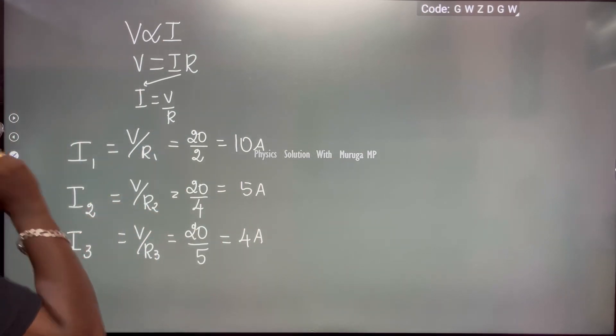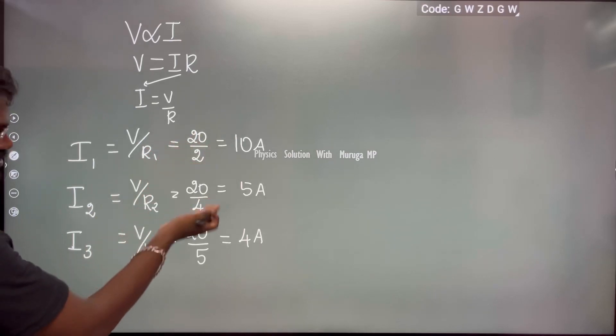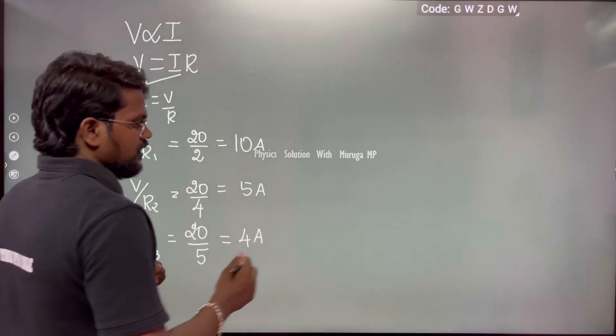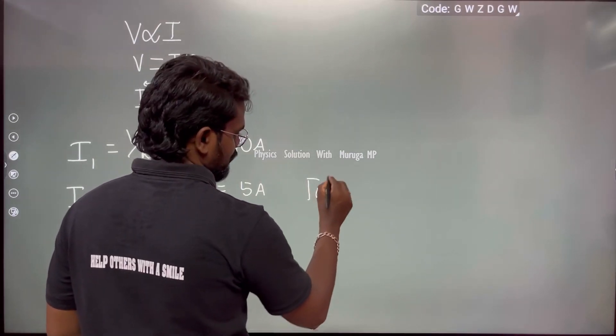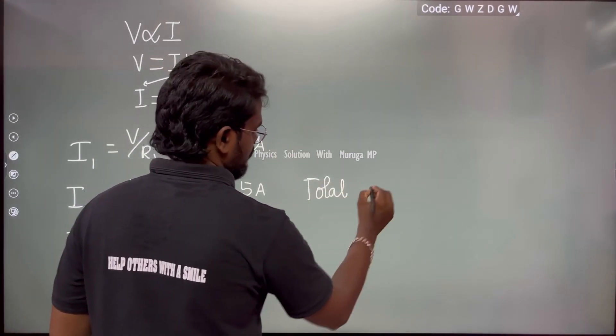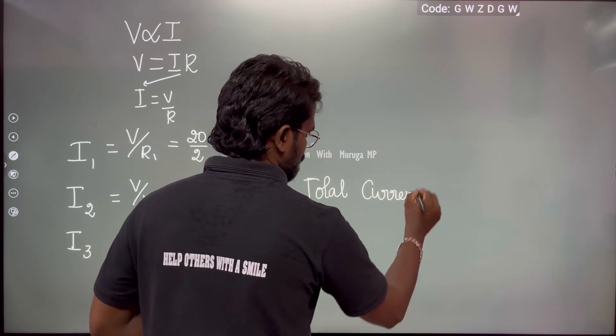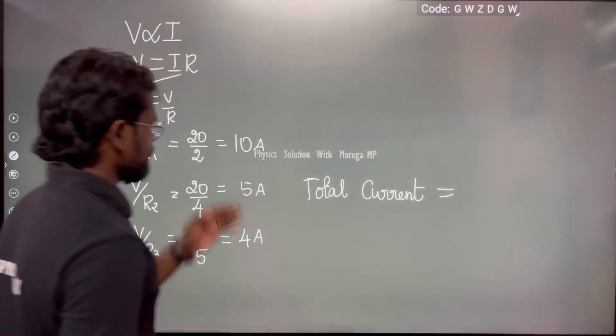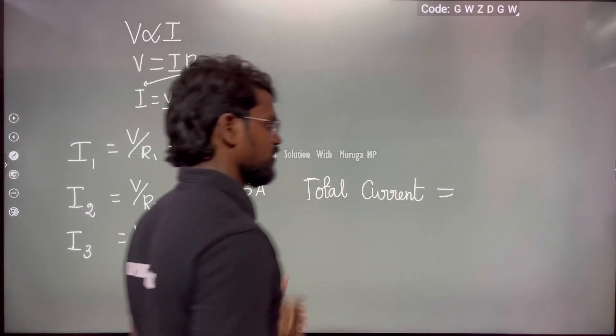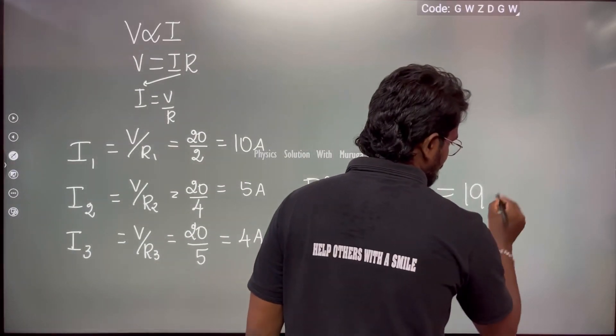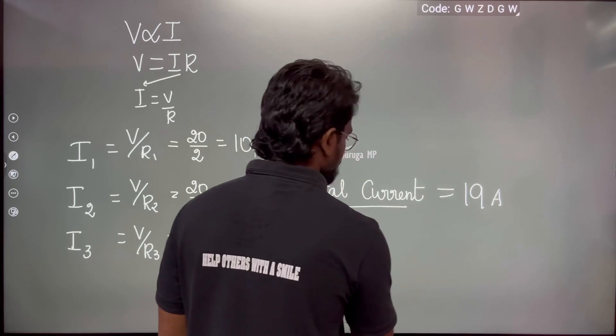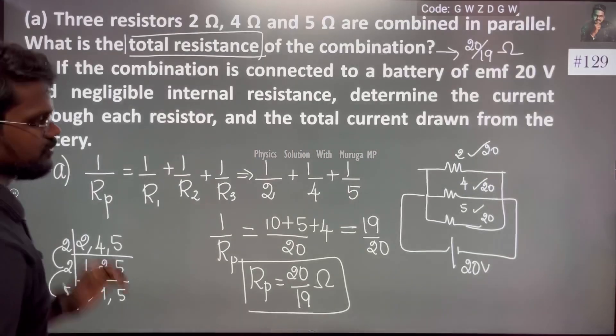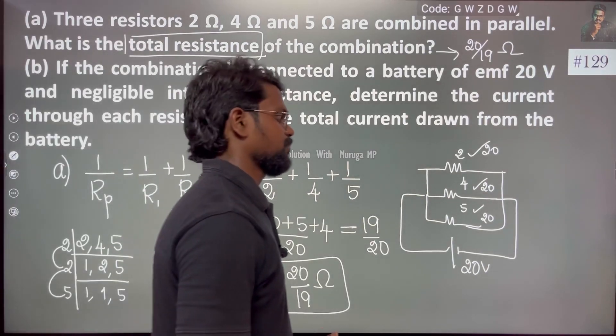So I1, I2, I3 - current through the first, second, third resistor. Total current in the circuit: I1 plus I2 plus I3, that is my total current, which is nothing but 10 plus 5 plus 4 equals 19 ampere. 19 ampere is the total current in this circuit.